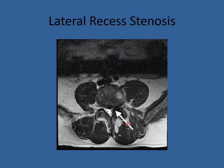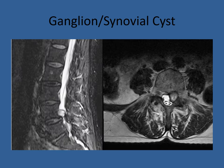Lateral recess stenosis can occur even without a crescent sign. There is a degenerative spur that has grown out into the facet. The right side is normal, while the left side is narrowed — and that is lateral recess stenosis.